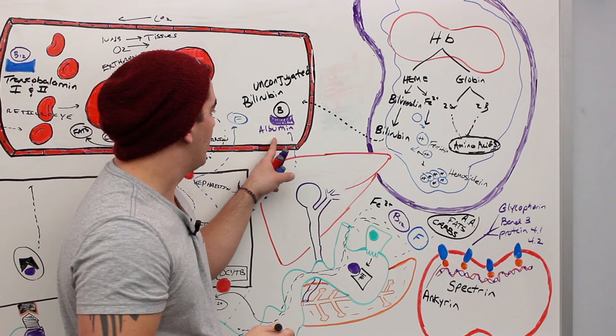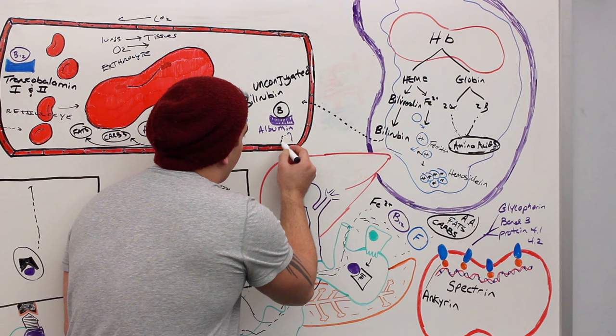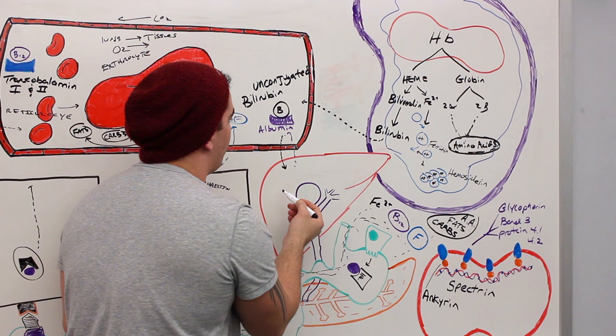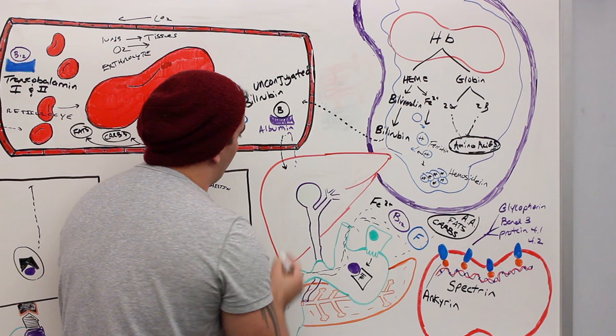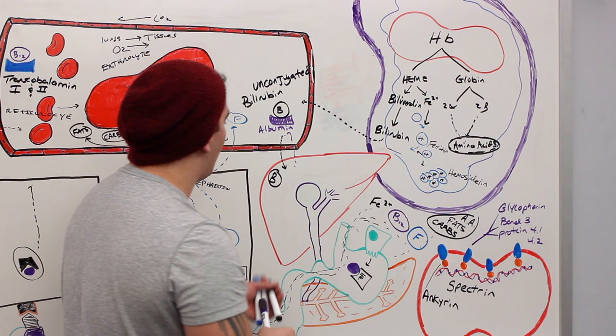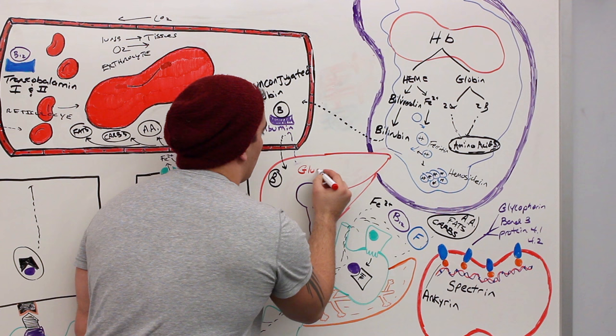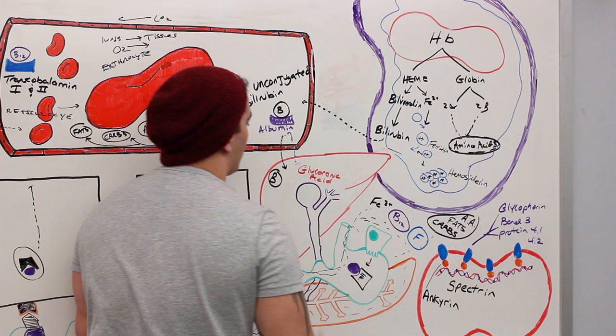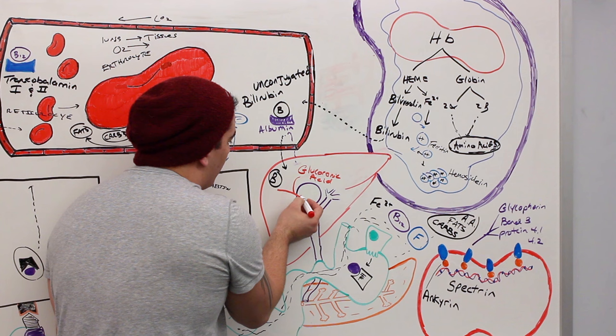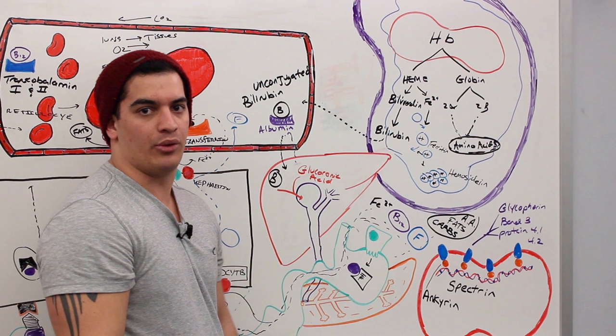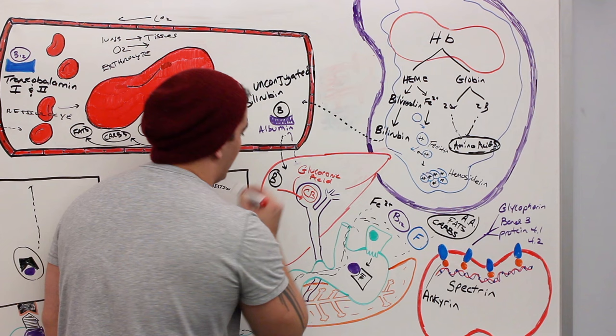This unconjugated bilirubin comes to the liver. The liver takes up the bilirubin through albumin and recycles the albumin. Then the bilirubin enters the liver, where the liver combines it with glucuronic acid — a sugar molecule. This produces conjugated bilirubin, which is very soluble. Conjugated bilirubin is simply glucuronic acid combined with bilirubin.